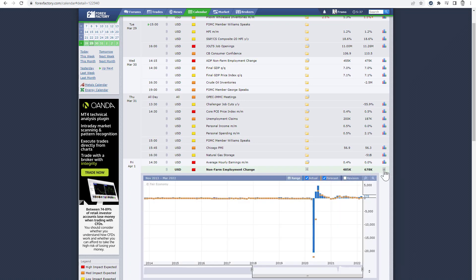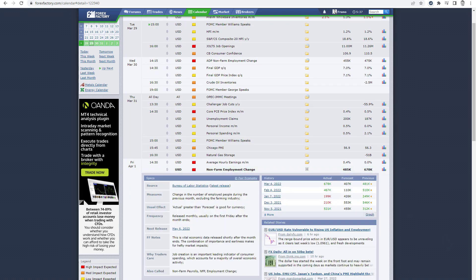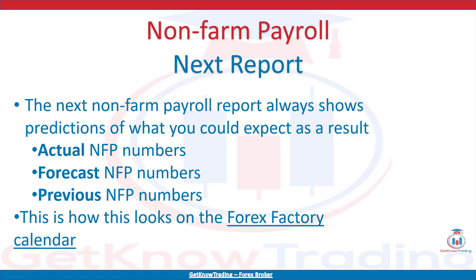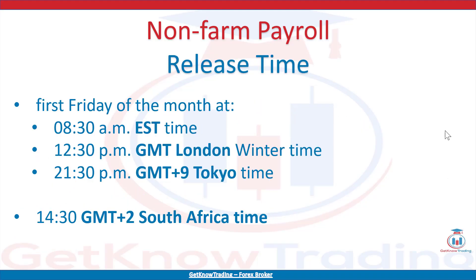Now let's talk about non-farm payroll report release time. Release time is always on the 1st Friday of the month at 8:30 am Eastern time. It is 12:30 pm GMT London winter time, and it is 21:30 pm GMT+9 Tokyo time.